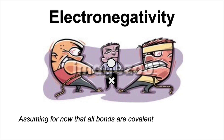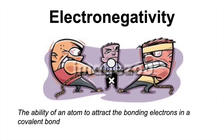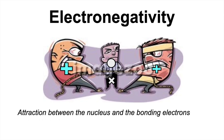We're just going to assume that all bonds are covalent. A good place to start is the definition of electronegativity, shown at the bottom of the screen: the ability of an atom to attract the bonding electrons in a covalent bond. You'll notice this diagram on the slides of a tug of war, and I think this is a good way to think about electronegativity — we've got a bonding pair of electrons there.